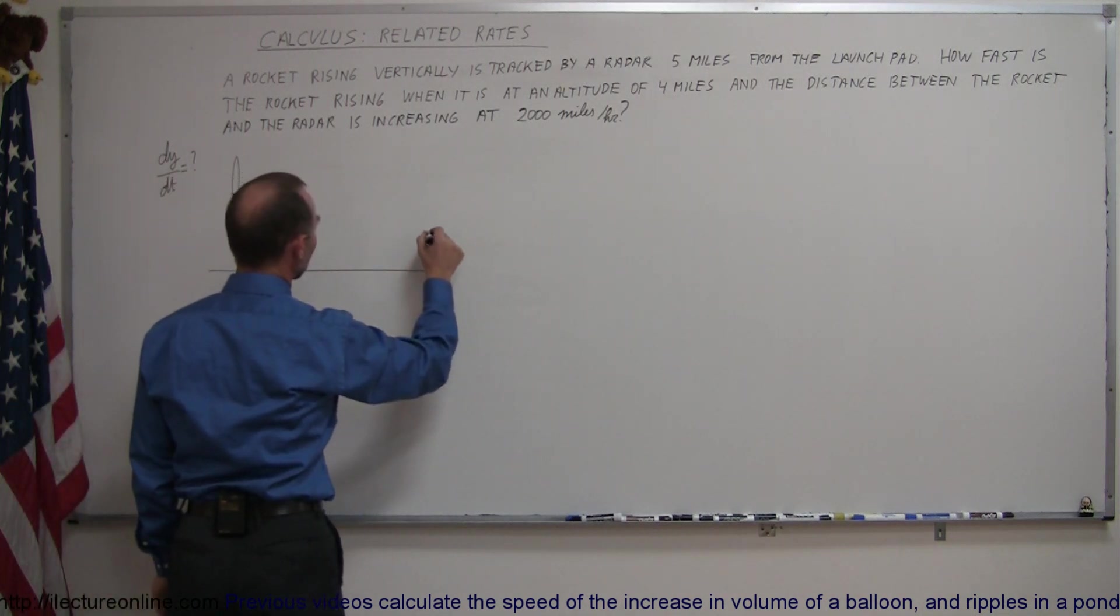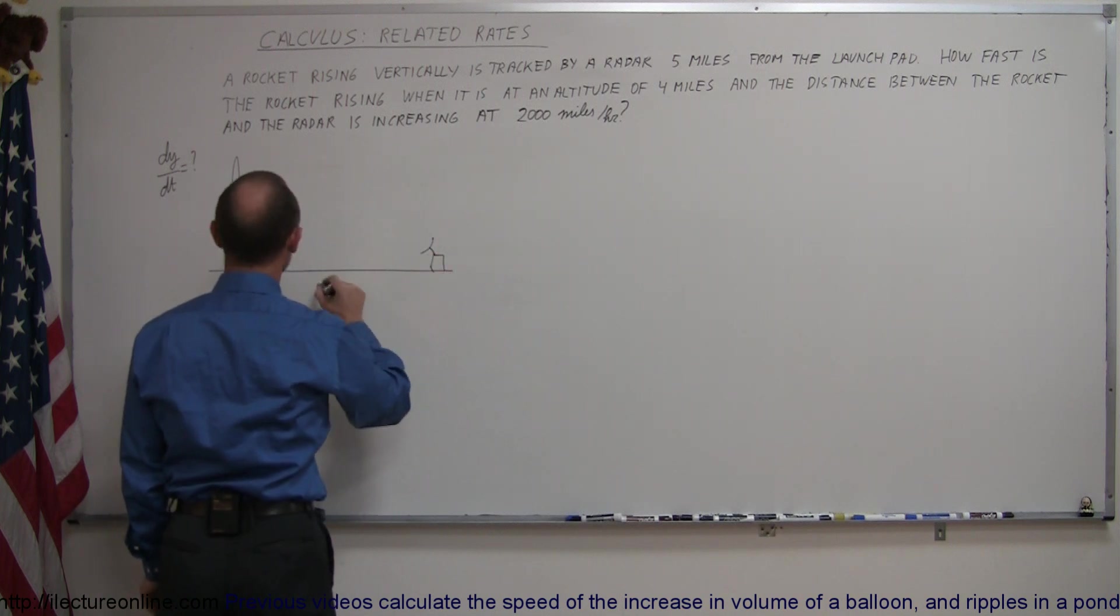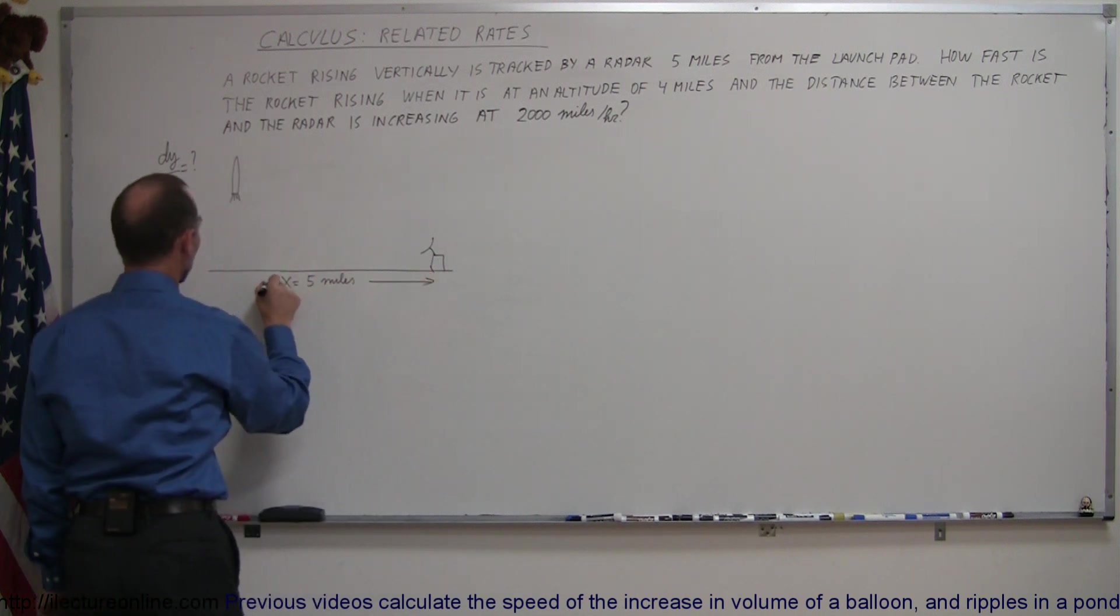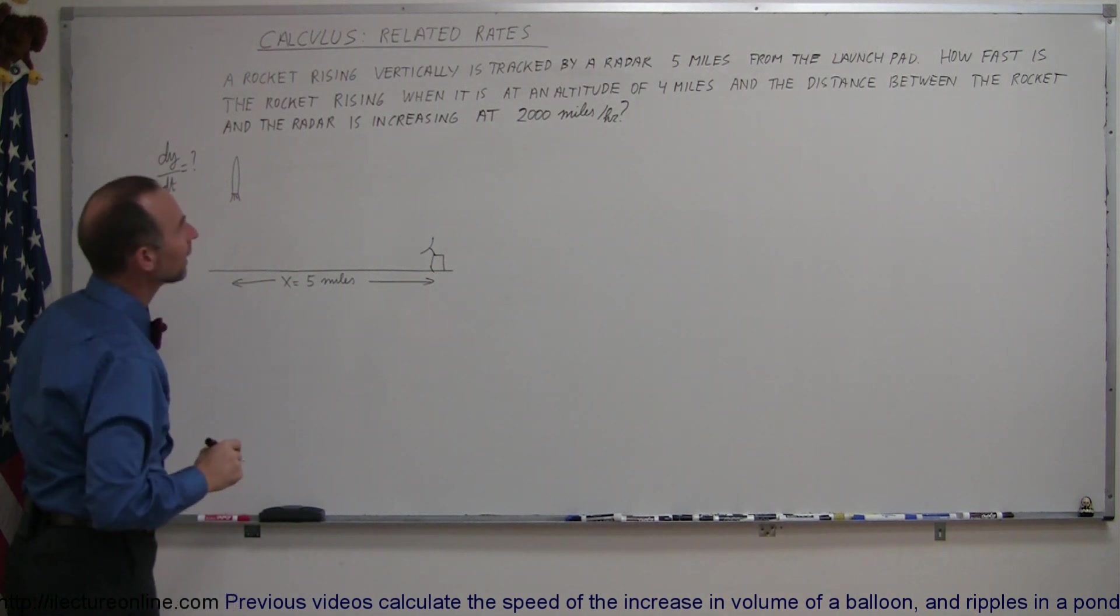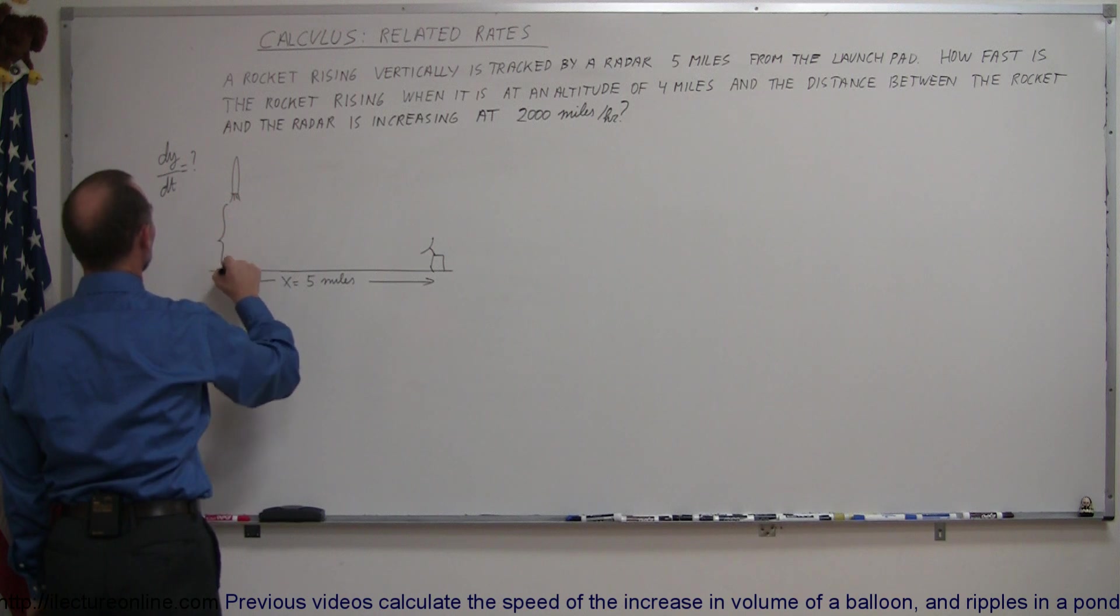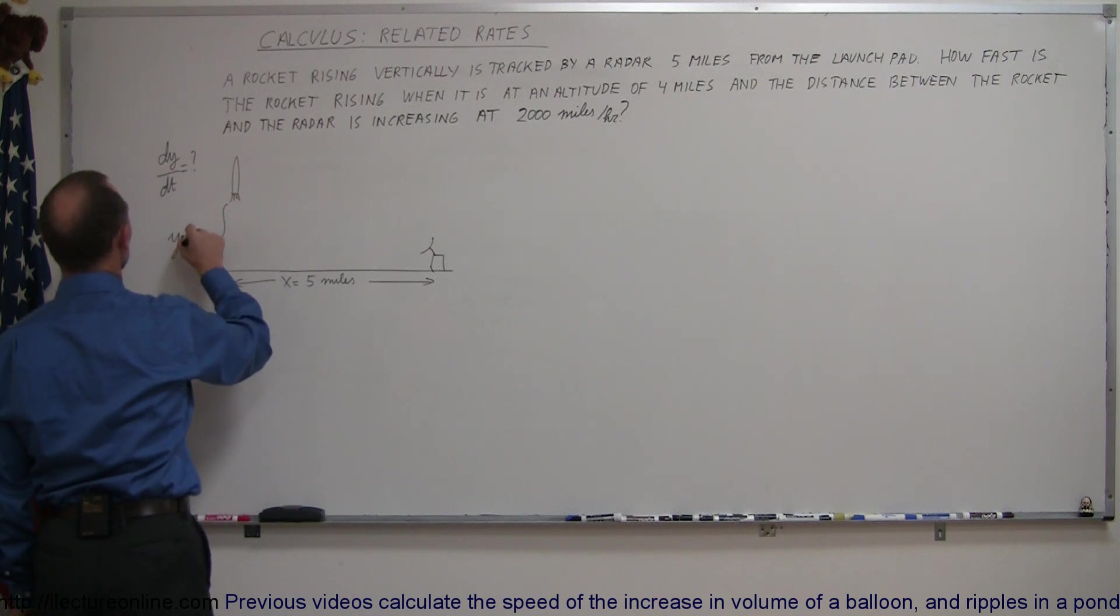We have a tracking radar over here. There's a radar station that's tracking that's five miles away. So this distance right here is five miles so let's call this distance x, five miles away. And at some point the rocket has an altitude of four miles. So this distance at some point will be y equals four miles. Like so.